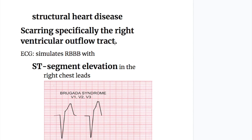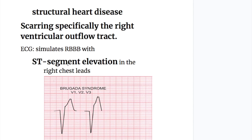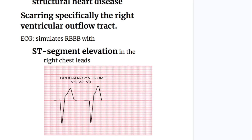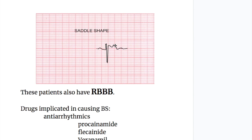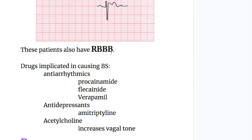A third hypothesis involves scarring especially in the right ventricular outflow tract, since this disorder occurs around the age of 35. The EKG of these patients simulates right bundle branch block, but the ST segment is elevated. There are two types of ST segment elevation in Brugada syndrome in the right chest leads: it may be coved shape or saddleback shape. These patients also have right bundle branch block.